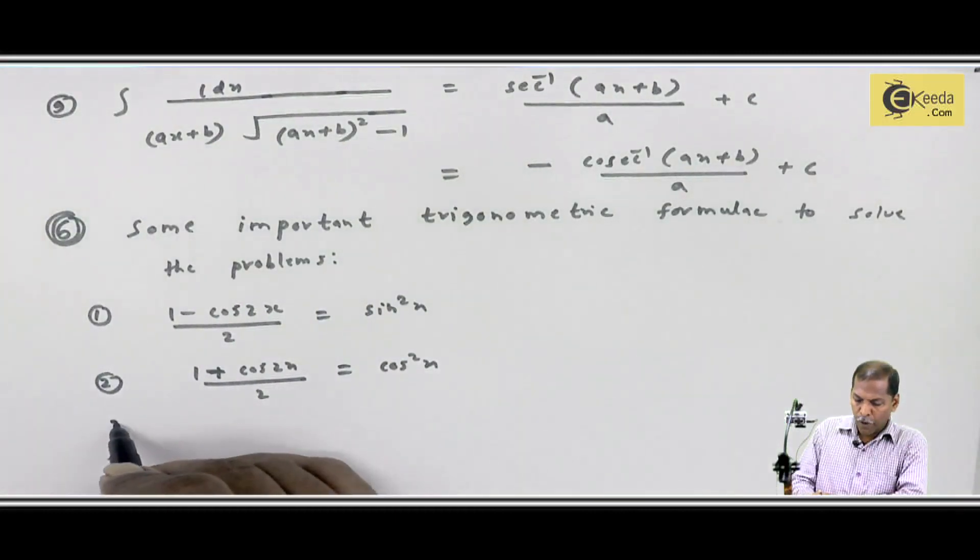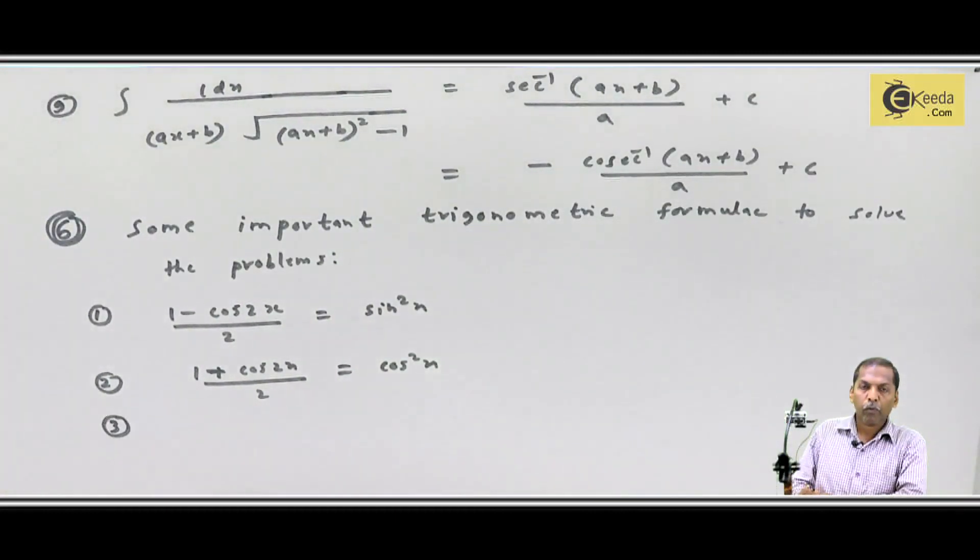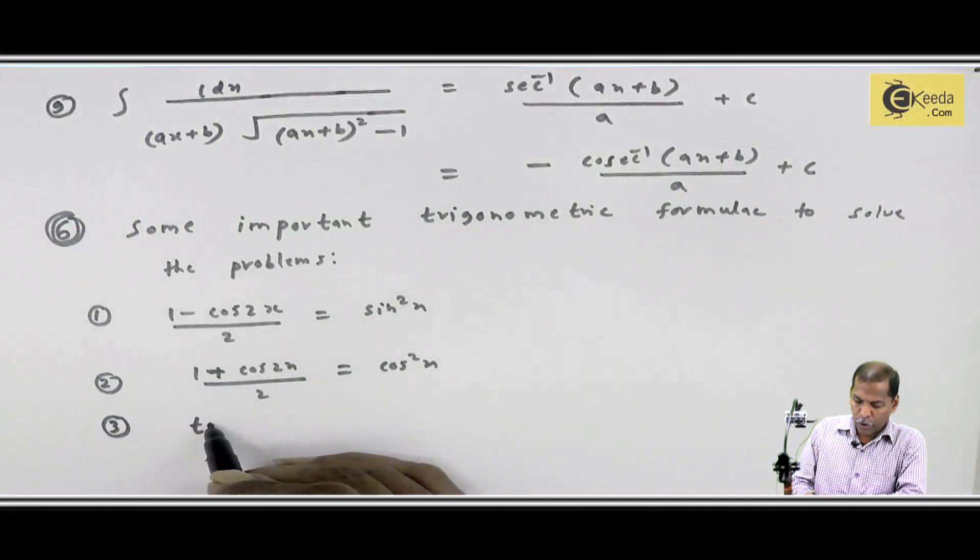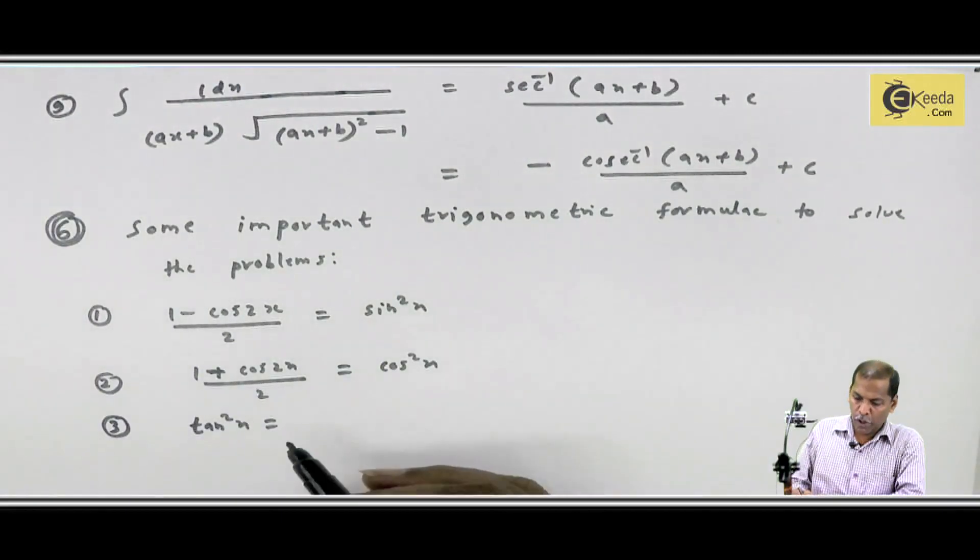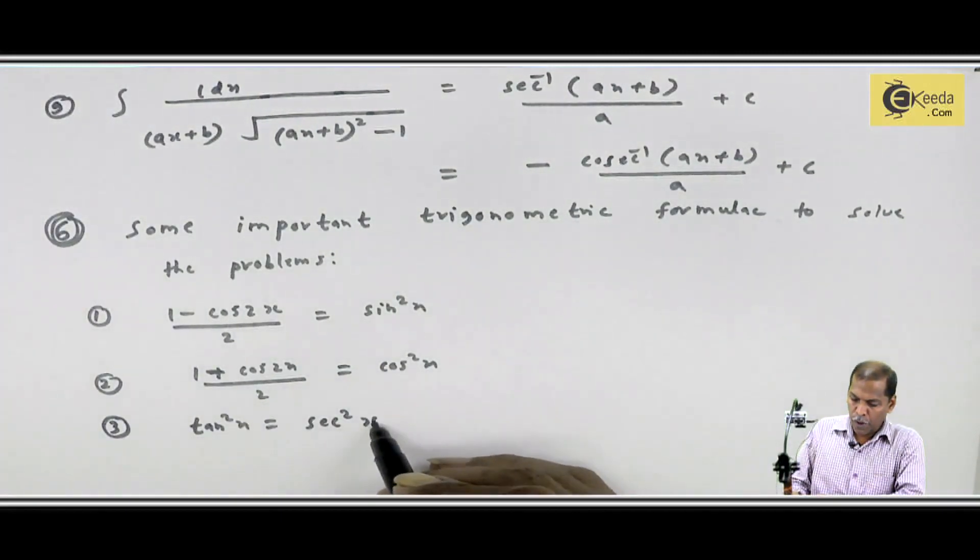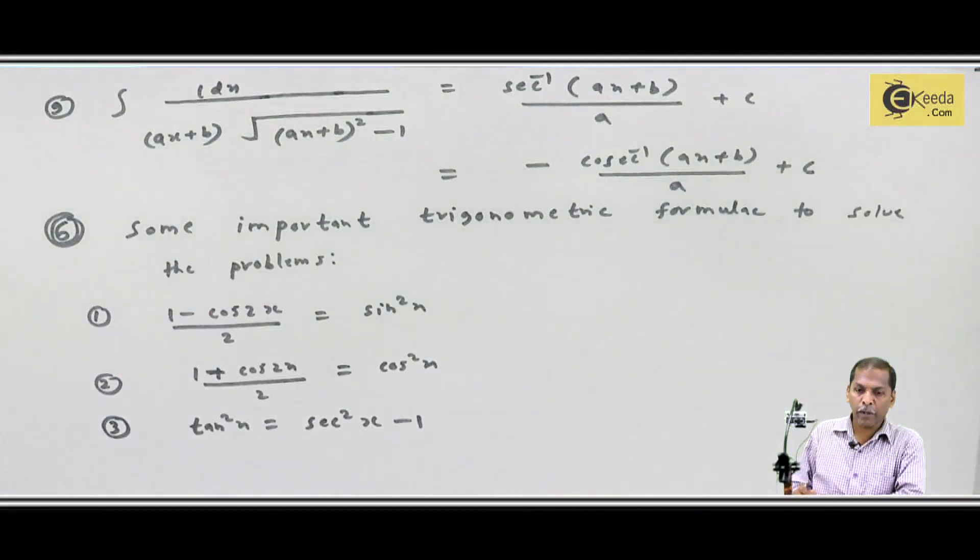Now, the third formula here is tan²x, which is equal to sec²x minus 1.